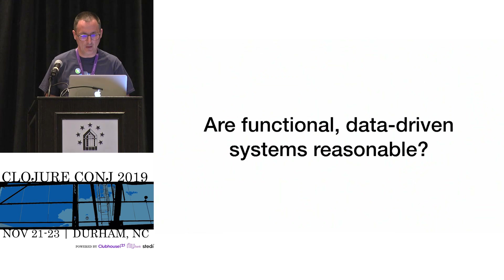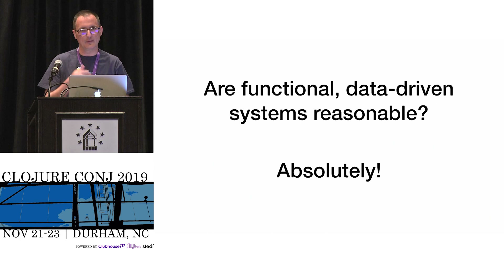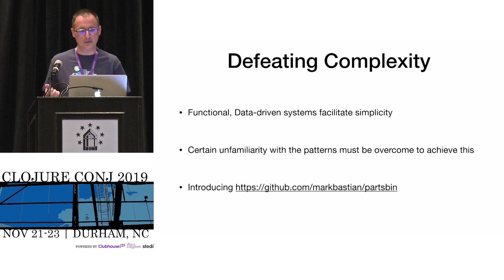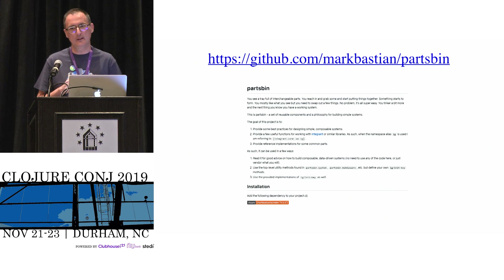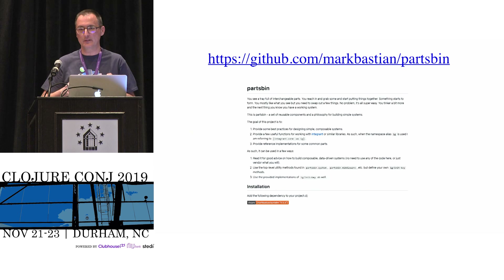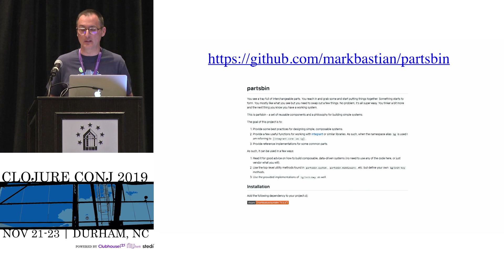Our functional data-driven system is absolutely reasonable. Once you get into this mindset and it becomes familiar, you kind of go crazy doing anything else. How do we defeat complexity? With functional data-driven systems — it can be unfamiliar at first, but once it becomes familiar it's a very powerful pattern. I've got a project called Partspin — please check it out. It provides philosophy and ideas on how to structure programs so they are functional and data-driven, plus Integrant implementations for popular libraries, middleware for dependency injection, and it's clear that if you like the philosophy but not the code, you can vendor whatever you want.